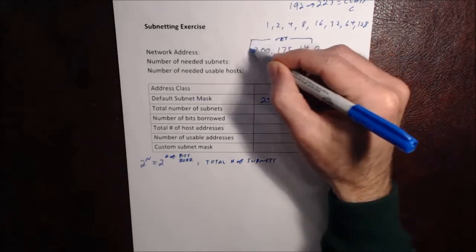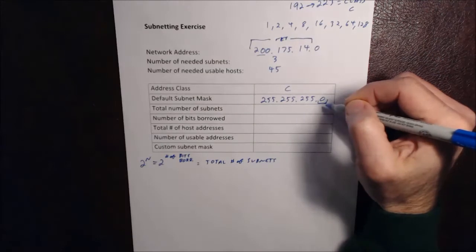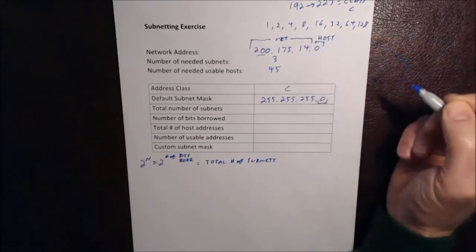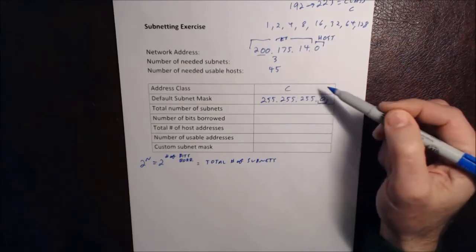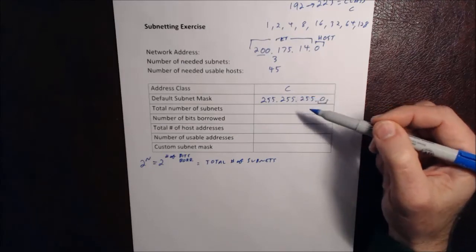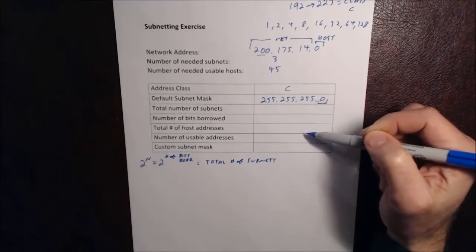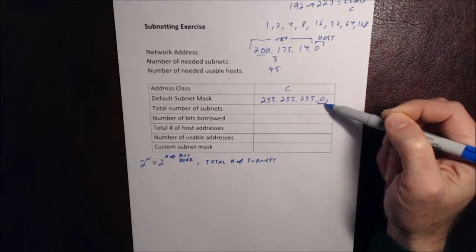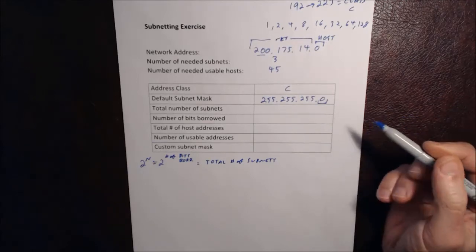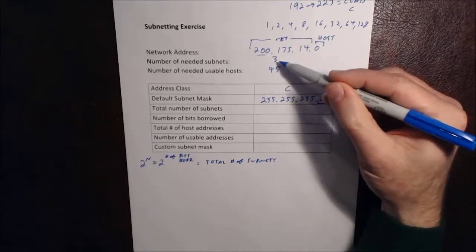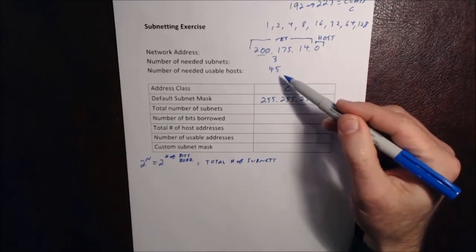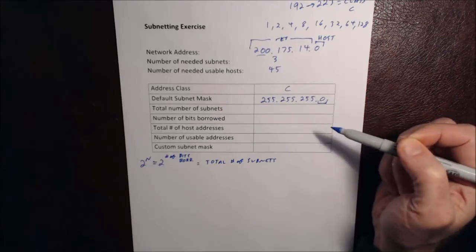And the 0s tell us where the host addresses are. So in this case, this is where all the host bits come from. If we did nothing, if we just left this network at its default, then we would have 256 total host addresses. We have 8 bits in this octet, 2 to the 8th power is 256. So because we want more subnets, we want at least 3, and fewer hosts per subnet, we don't need 256, we only need 45, we're going to change that around a little bit.